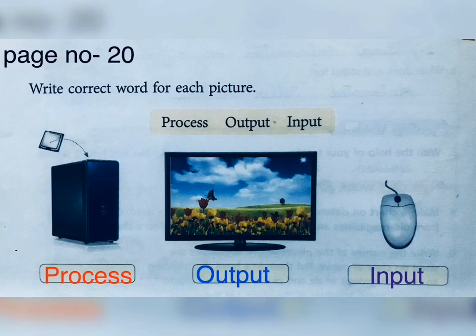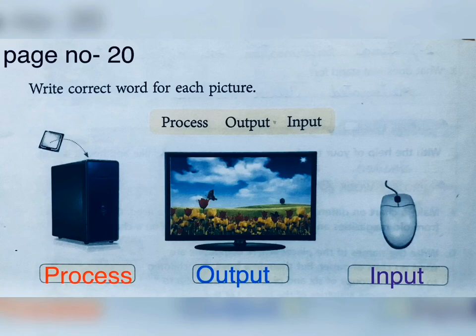Now children, let us do the exercise given in the lesson, page number 20: Write the correct word for each picture. First one is CPU — processing is done in the CPU, so you will write 'process'. Second one is monitor — we can see the result on the monitor, so write 'output'. Third one is mouse — we give instructions with the help of mouse, so write 'input'.